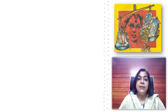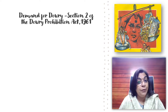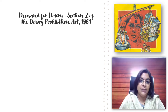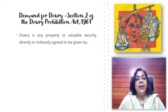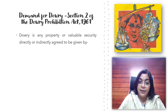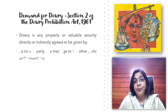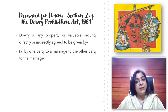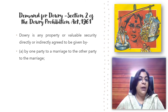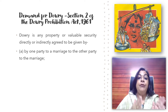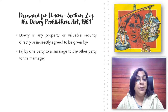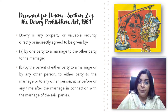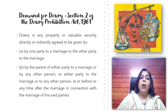Let us understand the meaning of dowry and what exactly constitutes a demand of dowry, as described under section 2 of the Dowry Prohibition Act 1961. Dowry means any property or valuable security directly or indirectly agreed to be given by one party to a marriage to another party — that is, usually from the bride's side to the bridegroom's side. If one party gives any sort of valuable security or property to another party, that will be considered a demand of dowry.